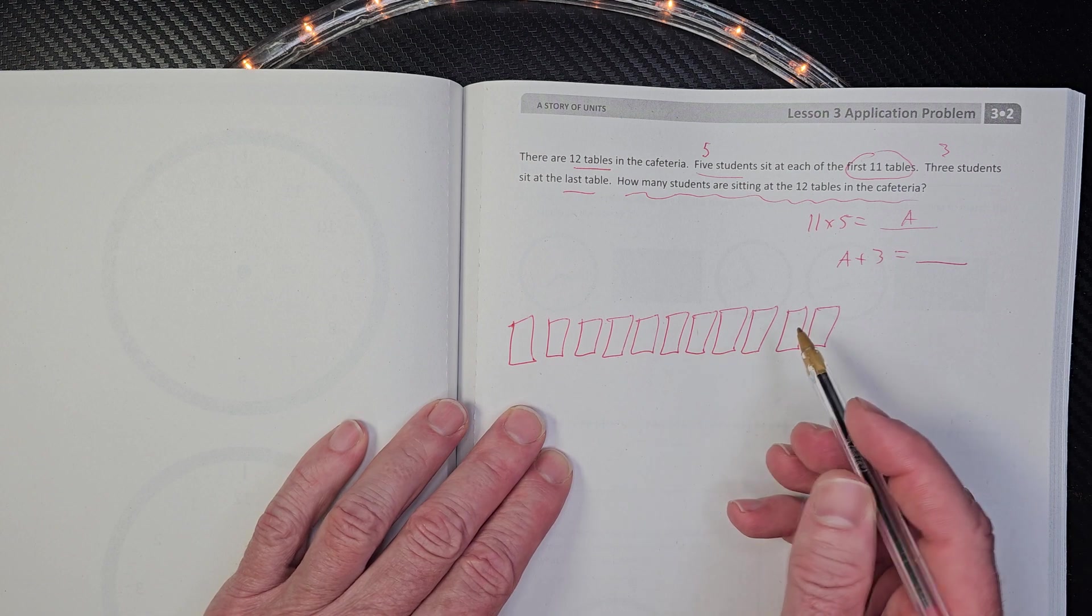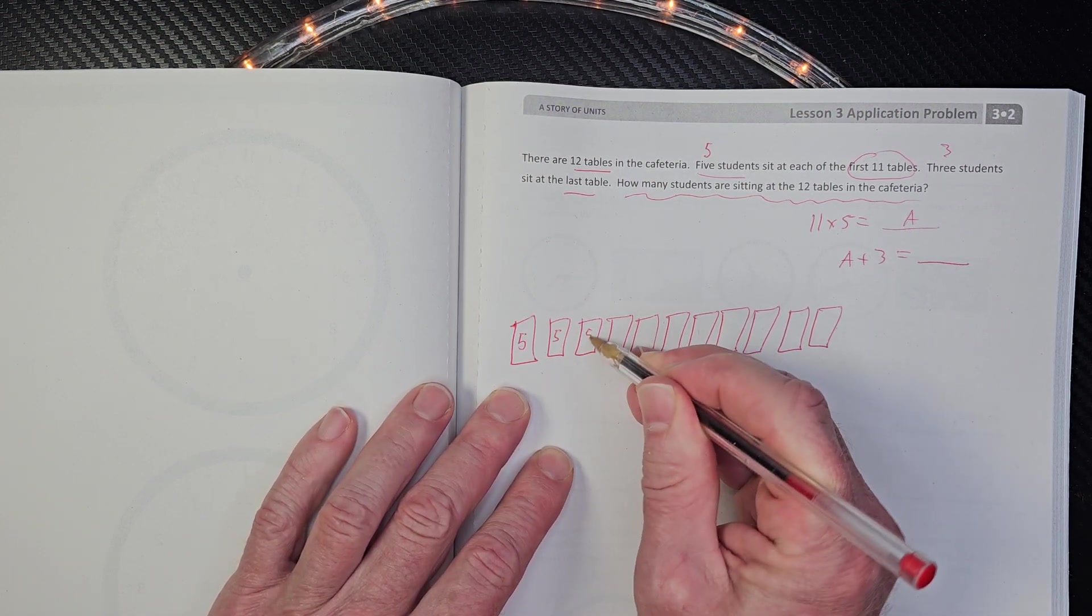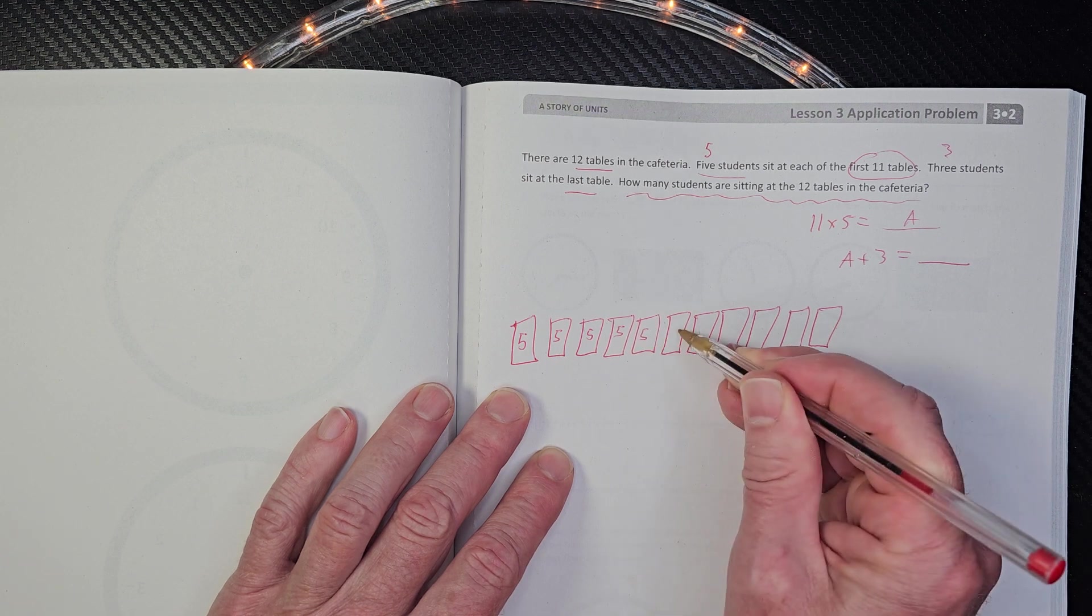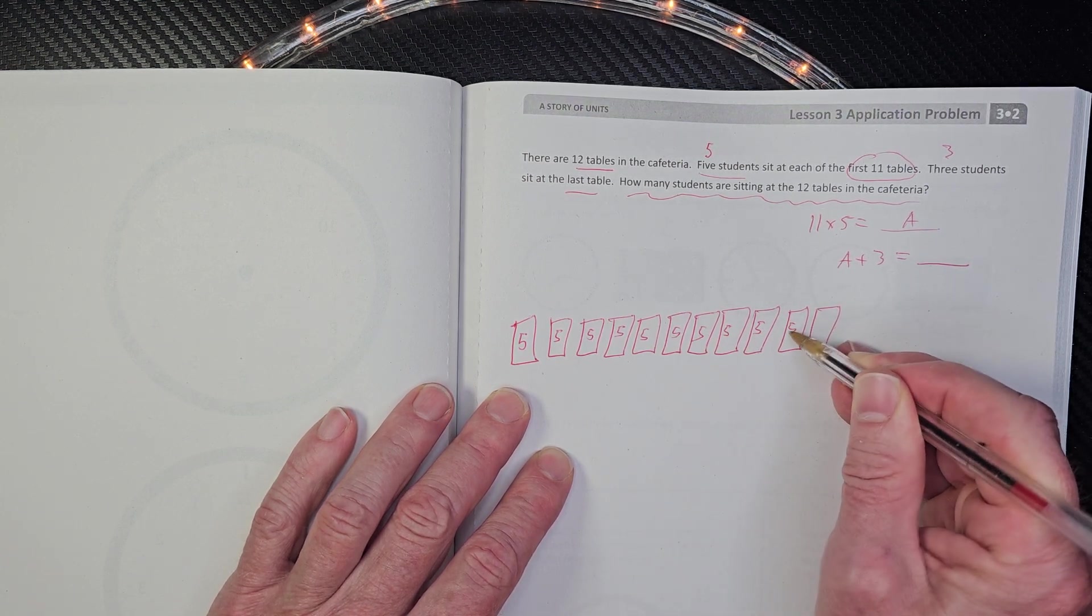There's five kiddos at each table at 11 tables. All right. So we have five each right here. Five, five, five, five.